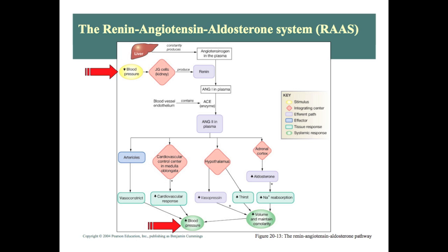When our blood pressure is low, our kidneys — specifically the granular cells — detect that low blood pressure, seen in the yellow circle and by the red arrow. The kidney responds by producing renin. Renin is important because it converts angiotensinogen in the plasma, released by the liver, into angiotensin-1 in the plasma.